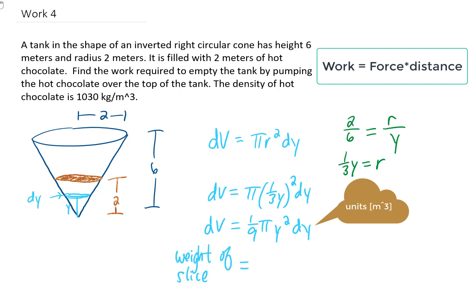The next question is, what is the weight of that little slice? You'll notice that we have a density given as 1030 kilograms per meter cubed. If we take that density and multiply it by the volume that we just found, that will give us the mass of this slice, and that's a mass and not a force or a weight because our units are given as kilograms.